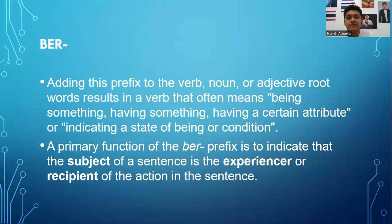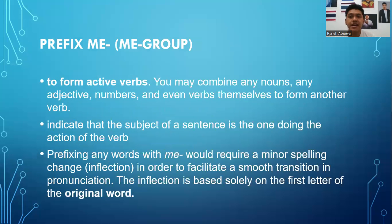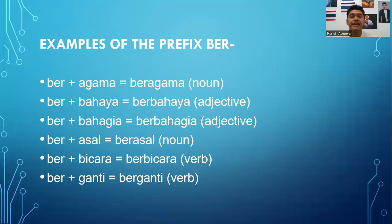The primary function of the ber prefix is to indicate that the subject of the sentence is the experiencer or the recipient of the action in the sentence. There are six examples of this prefix. Ber plus agama equals beragama, meaning having a religion — the root word agama means religion. The next one is ber plus bahaya — bahaya means danger — combined together into berbahaya, which turns into an adjective meaning to be dangerous.